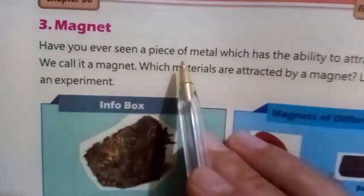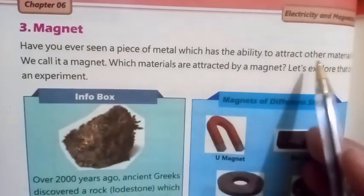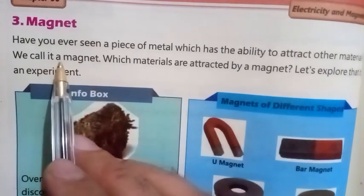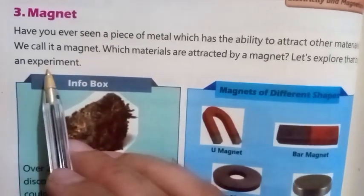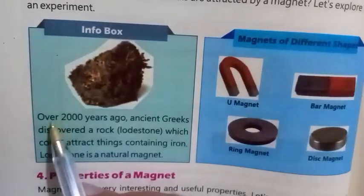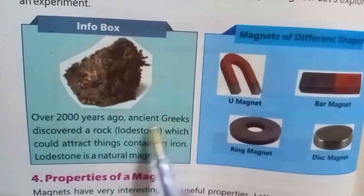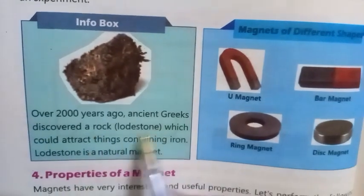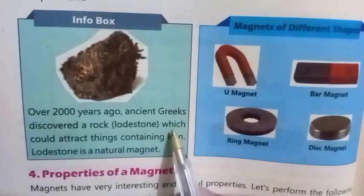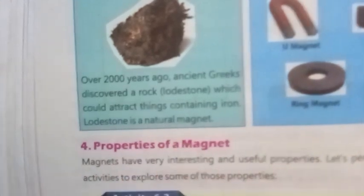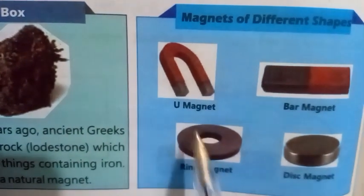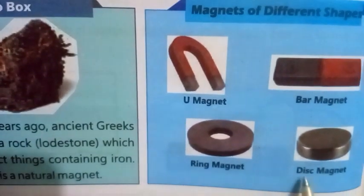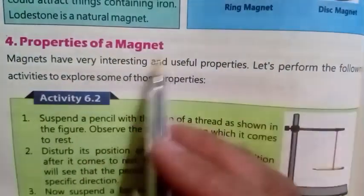A Magnet: Have you ever seen a piece of metal which has the ability to attract other materials? We call it a magnet. Which materials are attracted by a magnet? Let us explore that by an experiment. Info box: About 2000 years ago, ancient Greeks discovered a rock called lodestone which could attract things containing iron. Magnets come in different shapes: U-magnet, bar magnet, ring magnet, and disc magnet.